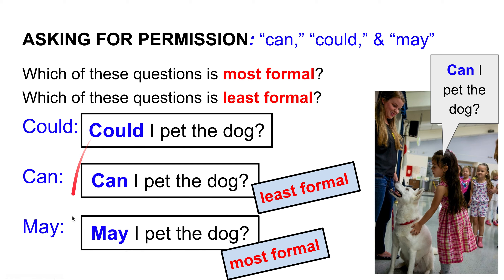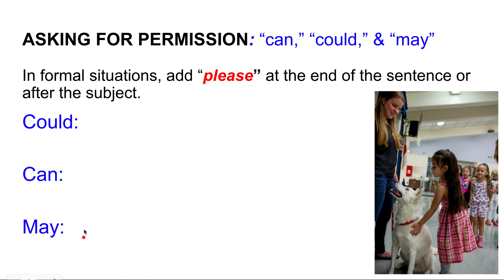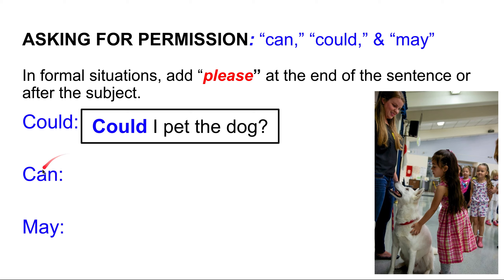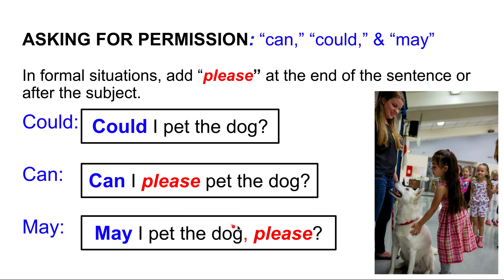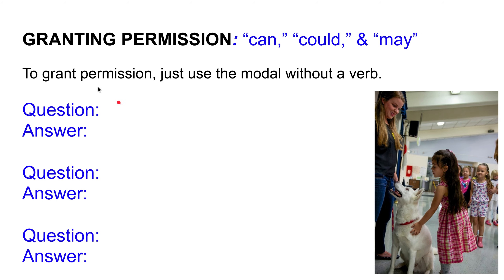We can also add 'please' for more polite requests. For example: 'can I please pet the dog?' — 'please' comes after the subject 'I.' Or we can add 'please' at the end: 'may I pet the dog, please?' If I want to grant permission — say yes — I use the modal without a verb.